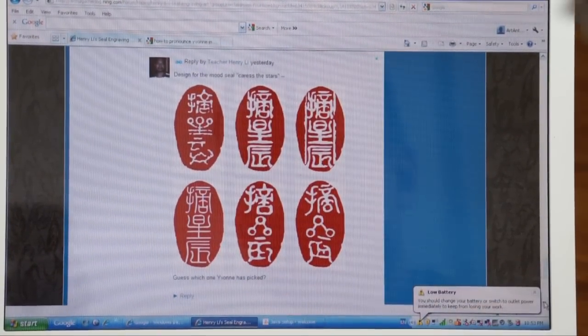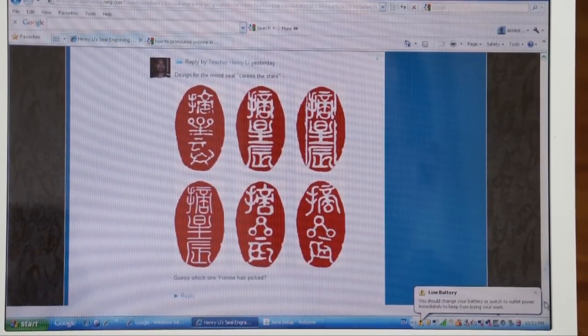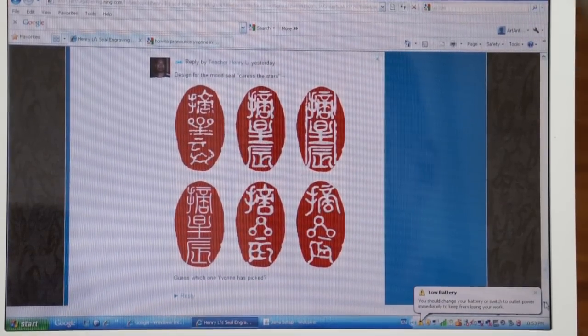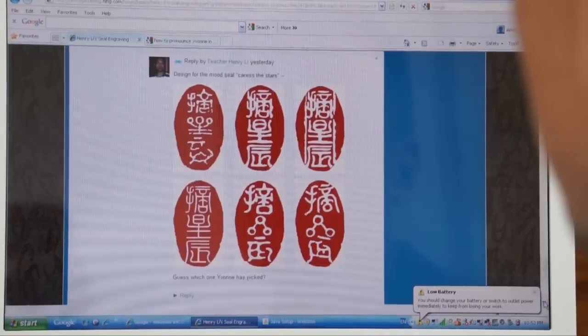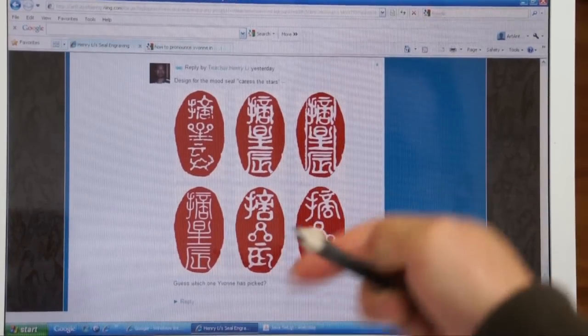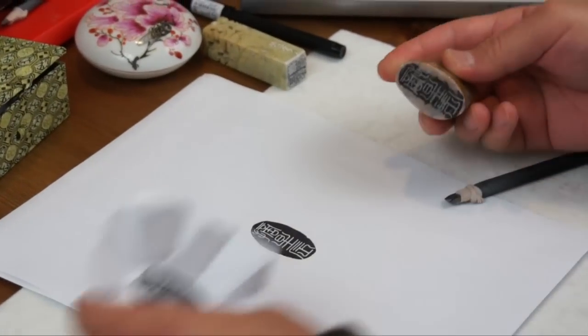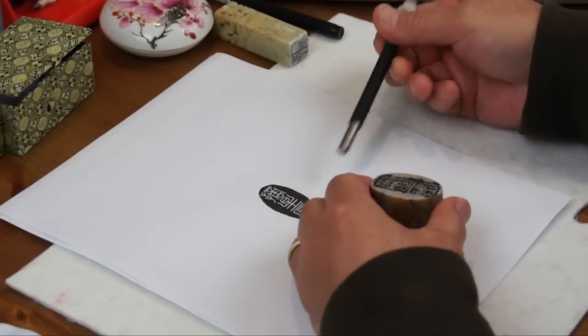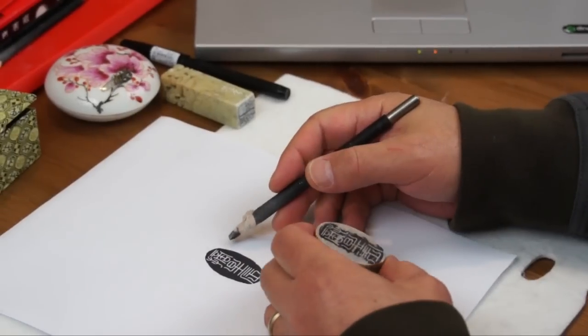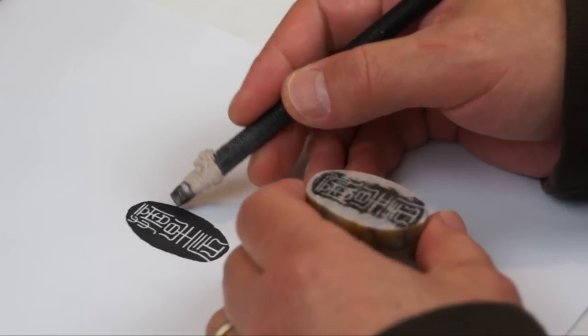And the design actually Yvonne chose is the original kind of font based on this script. So it's very neat. These are the variations I made by hand with the computer mouse. But now I have to carve it. Even though the design is very neat, the hand carving cannot convey the computer font.